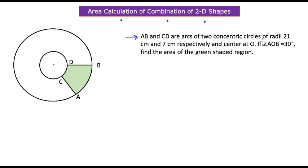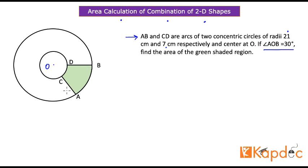The two circles have radii of 21 centimeters and 7 centimeters, and they are both concentric at center O. The angle AOB is 30 degrees, which means arc AB extends an angle of 30 degrees at the center. We need to find the area of the green shaded region.